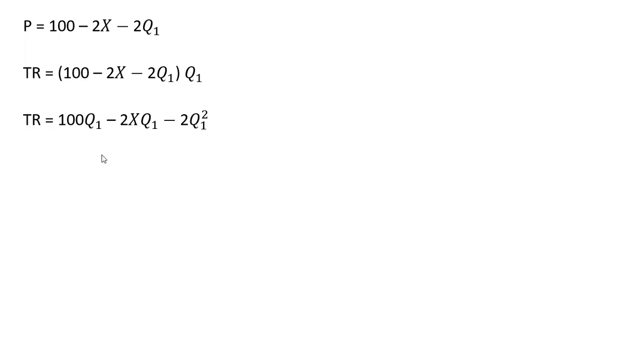And now we're going to get marginal revenue. Marginal revenue is the derivative of total revenue with respect to firm 1's output. So 100 times Q subscript 1 is just 100. This middle term here will just simplify to minus 2X, and this last term here will be 2 times 2, or minus 4 times the output of firm 1.